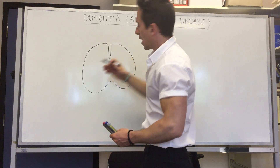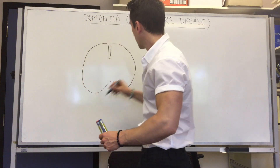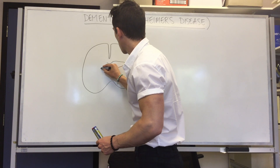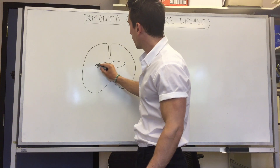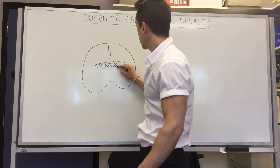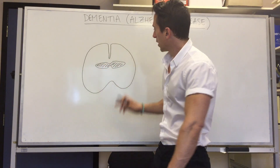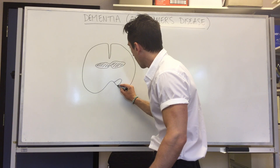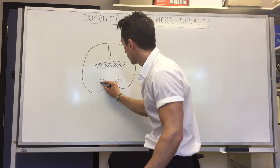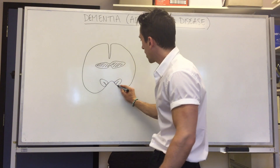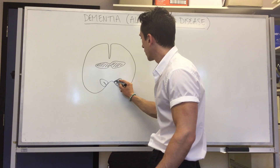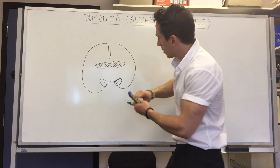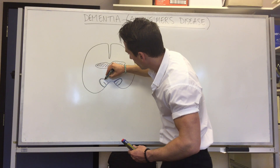Let me demonstrate this with a drawing. In a coronal section of a healthy brain, you have ventricles — spaces in the brain important for producing cerebrospinal fluid — specifically the lateral ventricles. You also have a very important structure called the hippocampus, which sits snugly within the inferior aspect of the lateral ventricle.